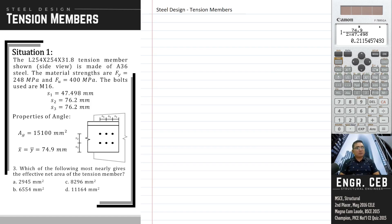Problem 3: which of the following most nearly gives the effective net area of the tension member? So for the effective net area, we determine that by using the formula A sub E equals U times A sub N.